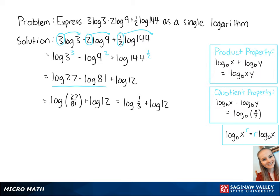Now we can use the product property to combine the remaining logs. So this becomes the log of 1 third times 12 which equals the log of 4. This is the final answer.